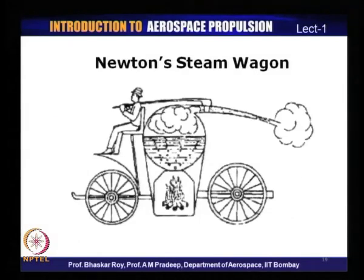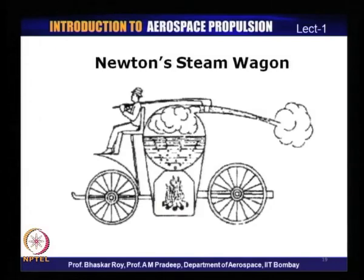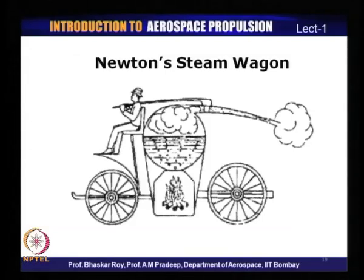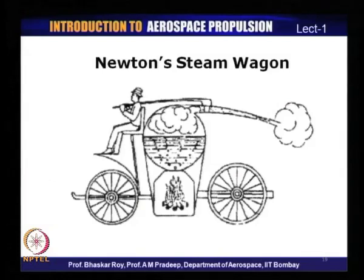And then came Isaac Newton's concept of the steam wagon. He created a sketch in which his concept was that if you create a steam jet out of a large heated beaker and allow that steam to come through a nozzle, the steam jet would aid the movement of a wagon — Newton's steam wagon. This was just a sketch, never made, and we are not quite sure it would actually work, because the force required to move a wagon would probably have been impossible to create through such a device.